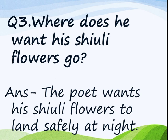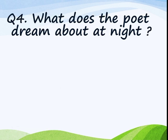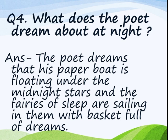Draw a line after that answer and switch to question number 4: What does the poet dream about at night? In the poem at the end, the poet dreams that the fairies are in his boat and they are carrying a basket full of dreams. We will write: the poet dreams that his paper boat is floating under the midnight stars and the fairies of sleep are sailing in them with a basket full of dreams. After this answer, draw a finishing line and then one more line to show that the question answers are ending here.